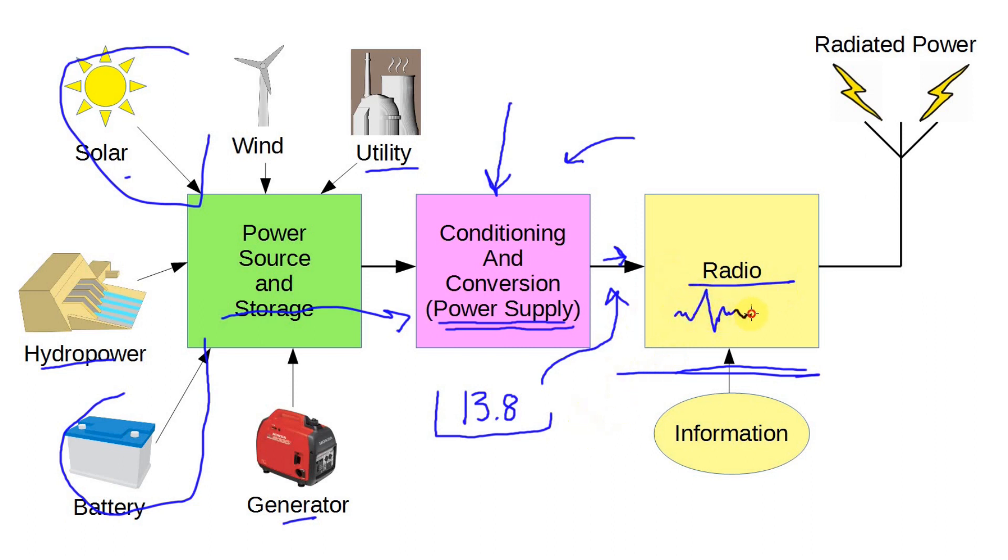Interestingly, if you look at the whole chain, the radio is simply a part of a system that converts power from a source to RF power that's radiated from our antennas.